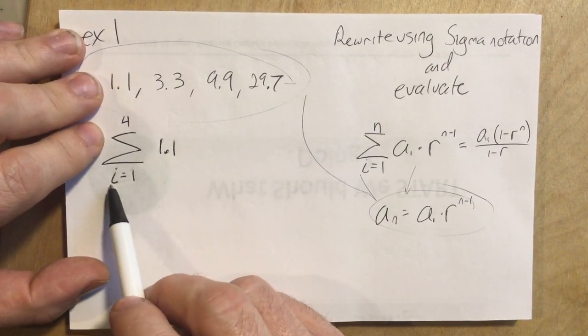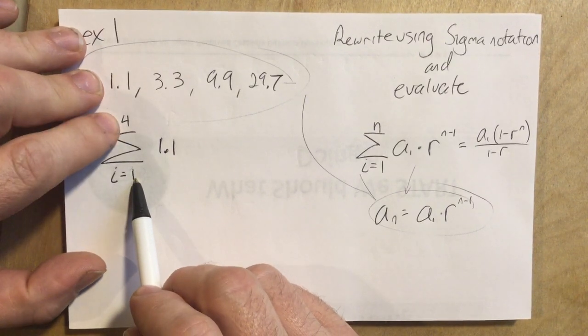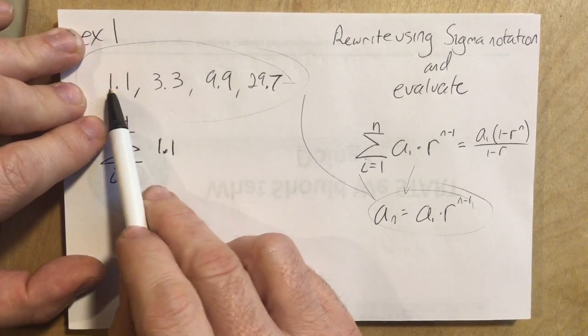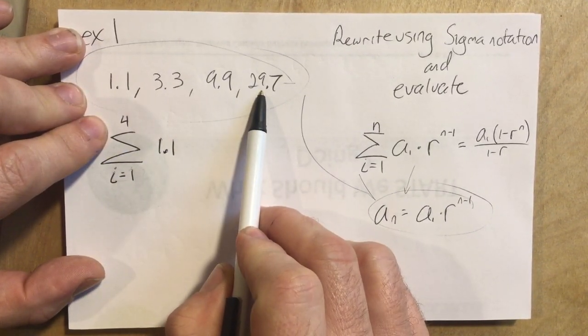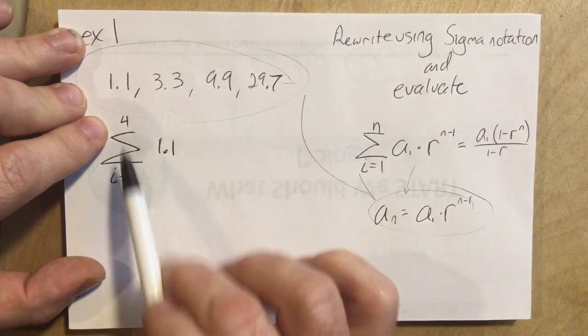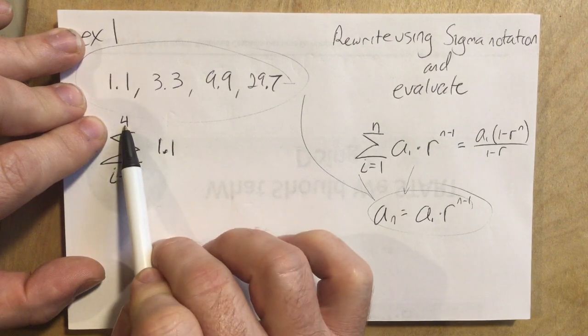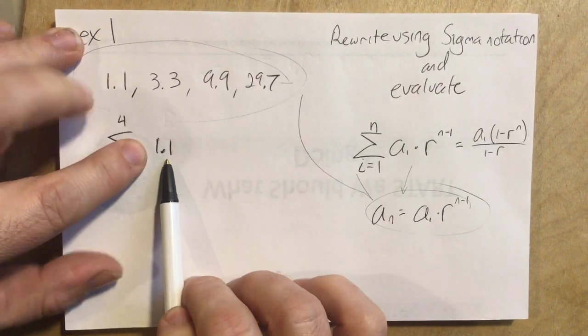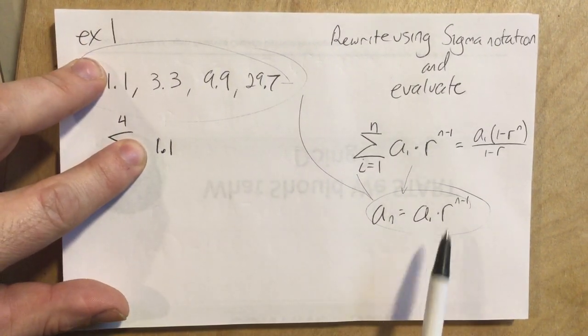And I didn't quite go over it, but i equals 1 to 4, that means a sub 1 to a sub 4. And that is what we have in this example, a sub 1, a sub 2, a sub 3, a sub 4. We're adding up a sub 1 through a sub 4. And here's the formula, a sub 1 times r.